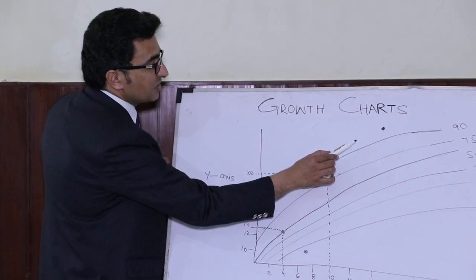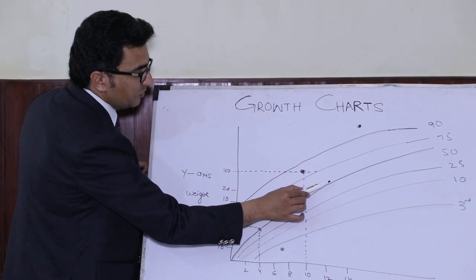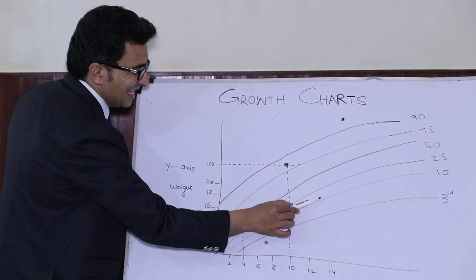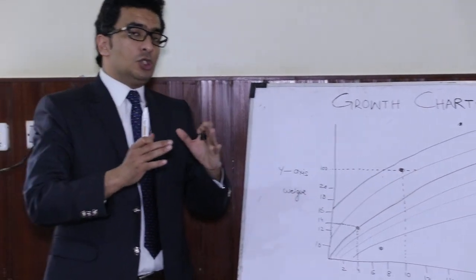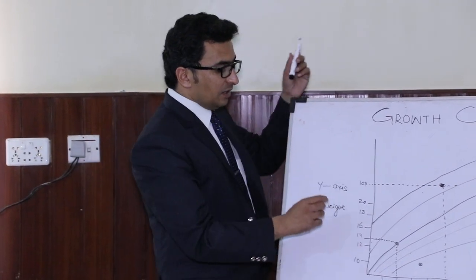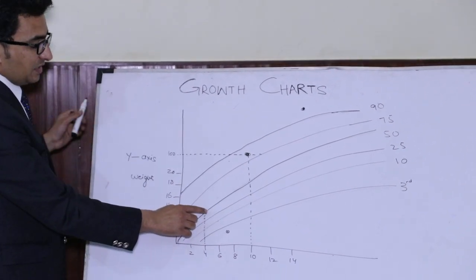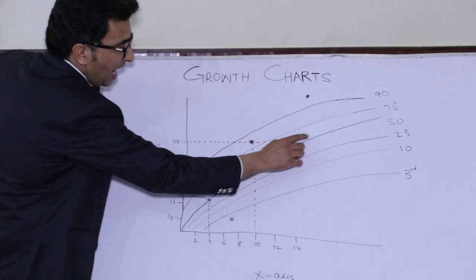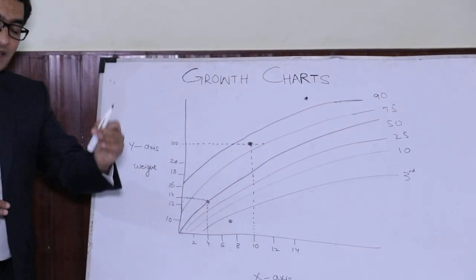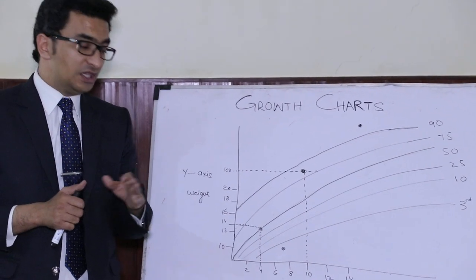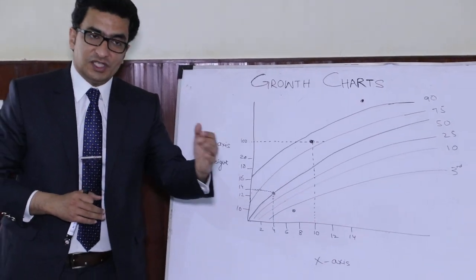There are different centile lines on the chart: the 97th centile, 75th centile, 50th centile, 25th centile, 10th centile, and 3rd centile. You will see where the final dot lies. In this case, the final dot lies at the 50th centile, so you will tell the examiner that the weight of this four-year-old child lies at the 50th centile.